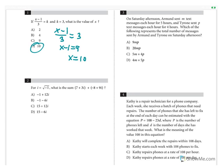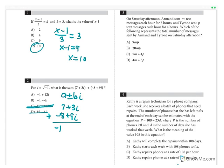Question 2: For i equals the square root of negative 1, what is the sum of (7 plus 3i) plus (negative 8 plus 9i)? We are dealing with complex numbers in the form a plus bi. When adding two complex numbers, we add the real portions: 7 plus negative 8 equals negative 1, which rules out answer choices C and D. Then we add the imaginary coefficients: 3 plus 9 equals 12. So the answer is negative 1 plus 12i.